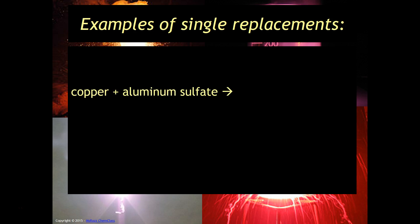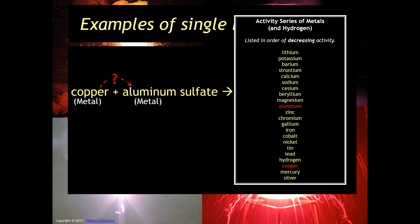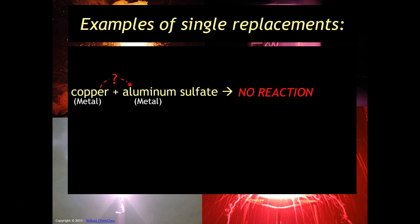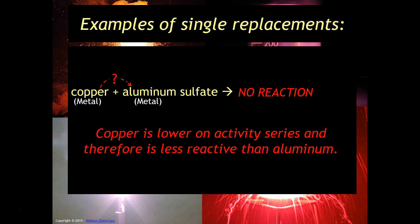Here's another example, copper plus aluminum sulfate. Again, copper is the metal, aluminum is the metal. So we have to check to see, can copper replace aluminum? So if you notice, copper is the thing that is by itself. That has to be the thing that is more reactive than the thing it is replacing. Well, guess what? In this case, since copper is below aluminum, it is not more reactive. It does not have the ability to replace the aluminum. So therefore, this reaction will not occur. So you could typically just write no reaction. Again, since copper is lower on the activity series and is therefore less reactive than aluminum, this reaction will not happen.